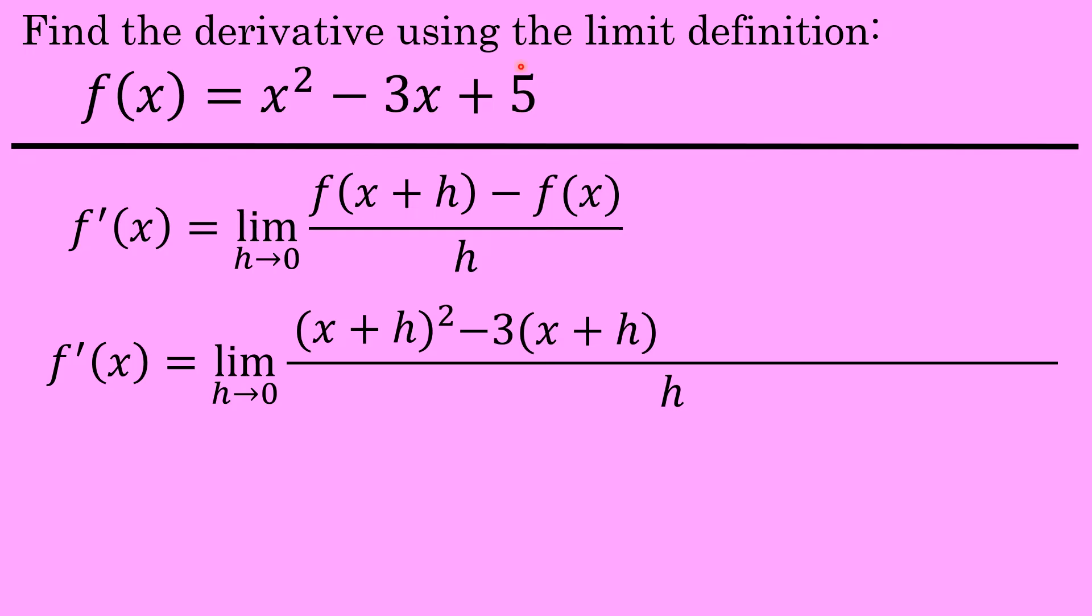The third term, plus 5, does not include a factor of x, so that is unchanged when writing down f of x plus h. So the three terms that you see on the screen now are the result of evaluating f of x plus h for x squared minus 3x plus 5.